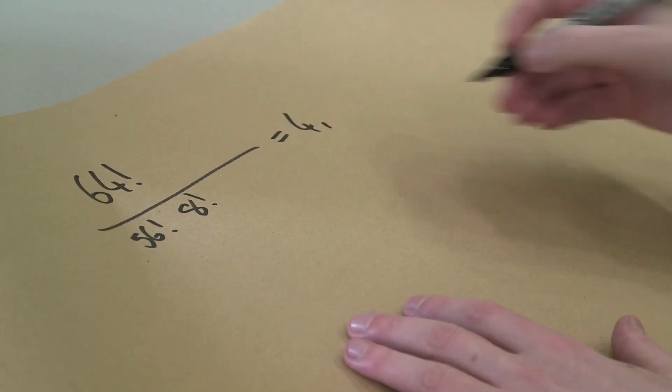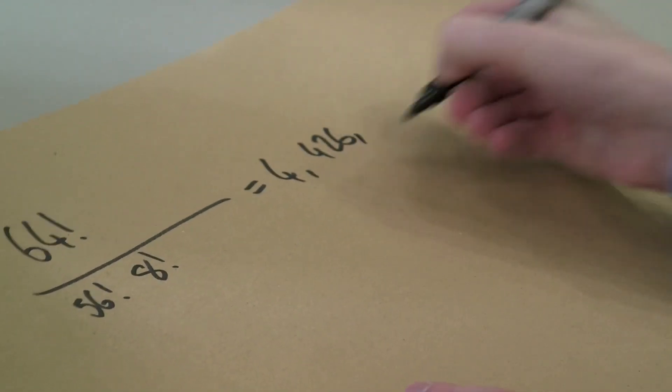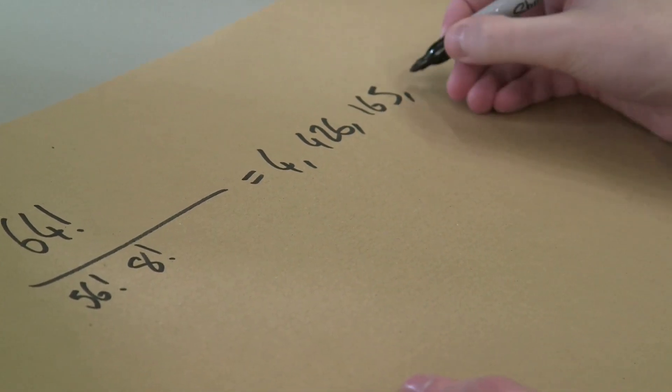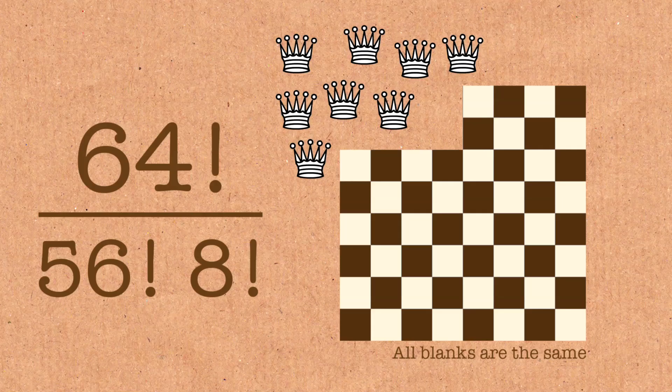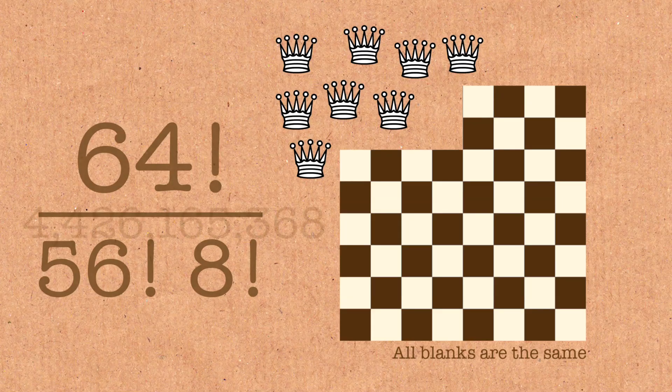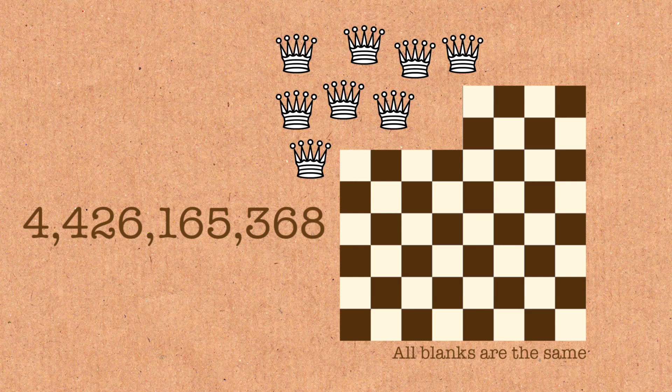So we'll divide through by 8 factorial. So the number of ways you can arrange those 8 queens naively is 4,426,165,368. So there are over 4 billion ways you can place your 8 queens on the board, but that's naively doing it.